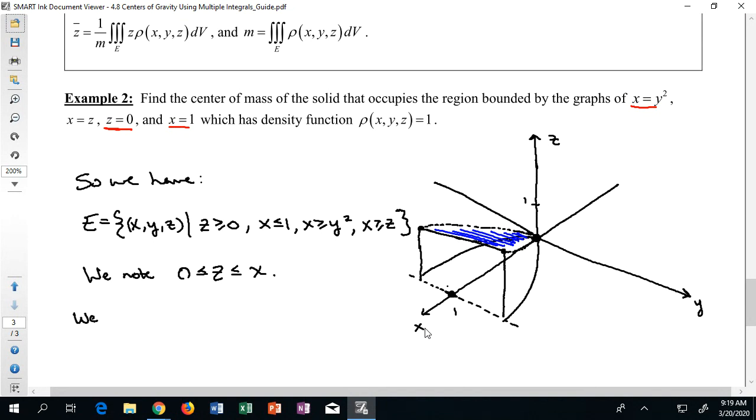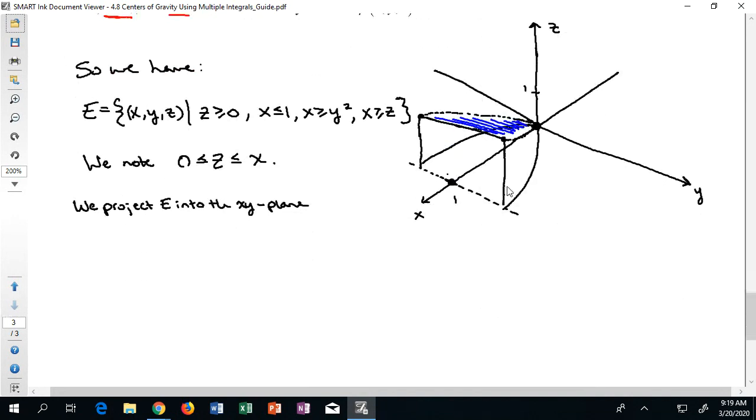Then I can go ahead and say that we project E into the xy plane, and when I do that I should be able to see that parabola shape that we had, that opened like this. Again, we know that it stopped at one. So here's my region D, and I can see it down here in this picture—it's this region down there. So there's my region D, that's the projection down to the xy plane.